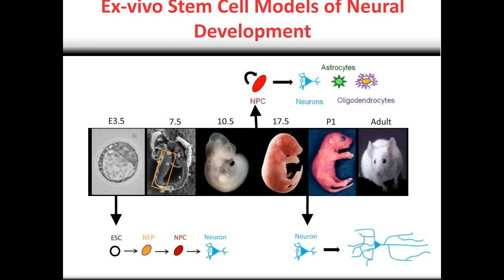In other instances we may be trying to interrogate the role of a gene in neurons — whether it be the way that neurons connect with one another, form networks or communicate. In this instance we really like a pure population of neurons to study, and we can do this by isolating neurons from the developing hippocampus, which gives a nice homogeneous population of cells. The benefit of using all of these in vitro systems is that they're highly accessible and amenable to manipulation — you can quite easily overexpress or knock down genes of interest, or add small molecule inhibitors, to model the effects of genetic change.